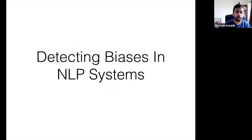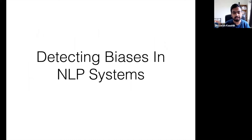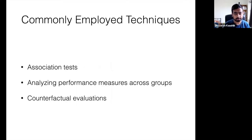Now that we've had a broad overview of what kind of issues we broadly observe in NLP, how can we go about detecting whether some of these biases exist in NLP models? We'll discuss a couple of methods in the next part of the lecture, primarily focusing on biases against protected attributes. There are three commonly employed techniques: association tests, counterfactual evaluations, and comparing performance measures or error rates across groups.